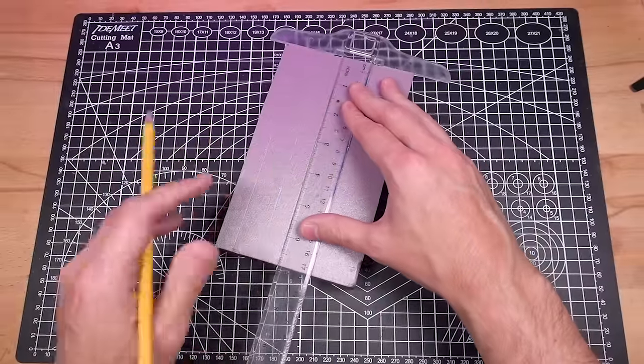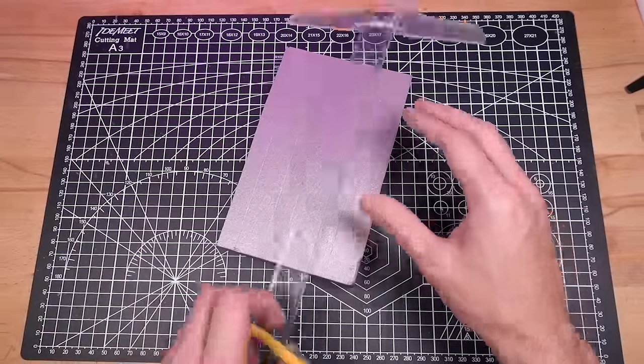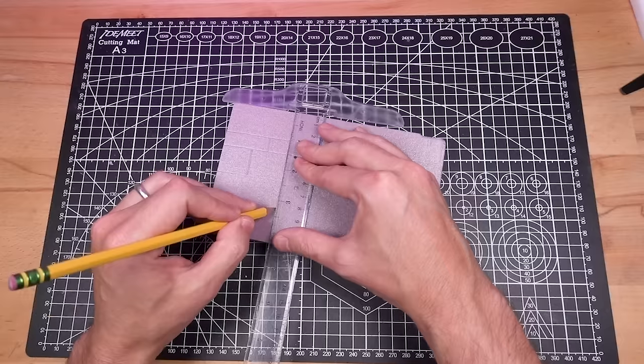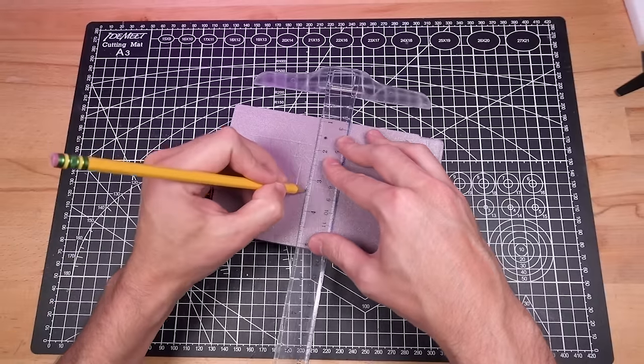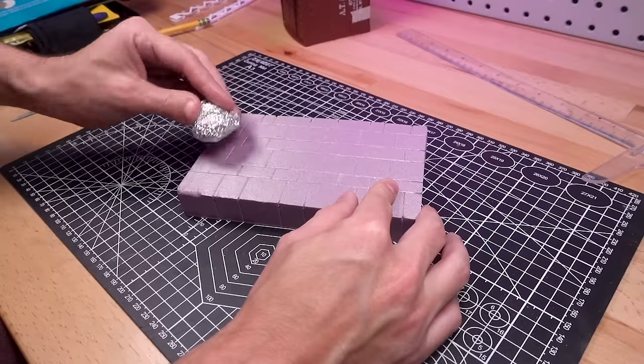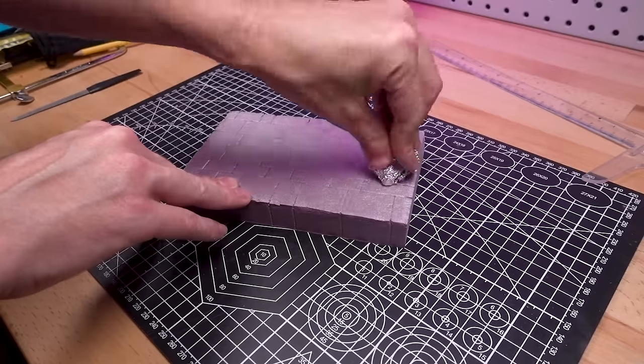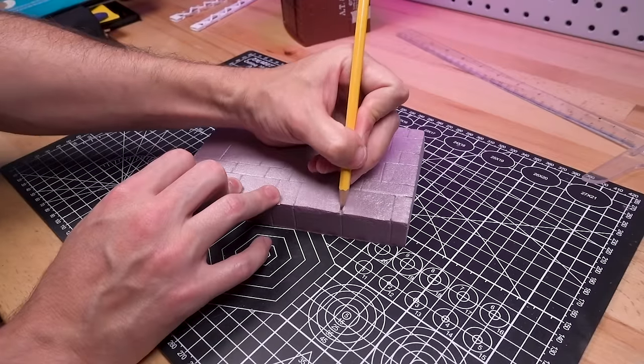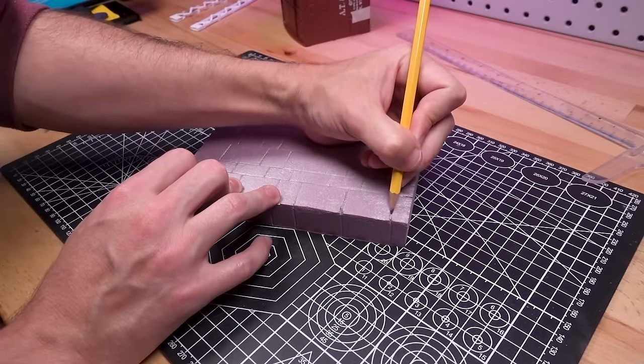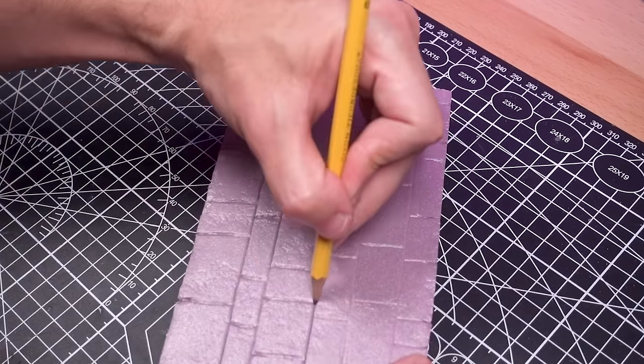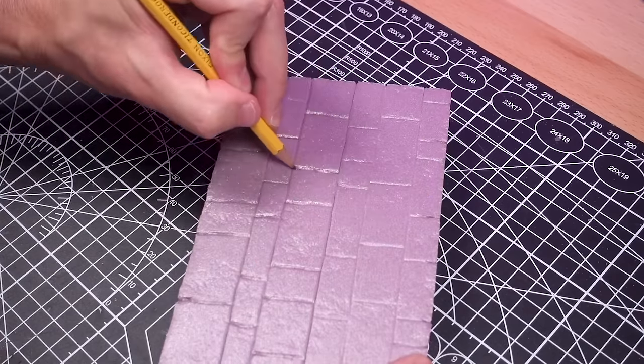For the stone pedestal beneath the structure, it was a pretty straightforward process of scoring the XPS foam with a blunted pencil tip. Everything was then given a rocky texture with some crumpled foil. You could spend a lot more time on something like this for added realism, but since this wasn't going to be a focal point, I was okay moving quickly through this part of the process.